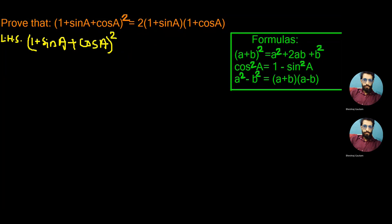Namaste, welcome back to the trigonometric section. In today's problem, we have LHS as one plus sine A plus cos A, whole square, and on the right side we have two times one plus sine A into one plus cos A, which needs to be proved.